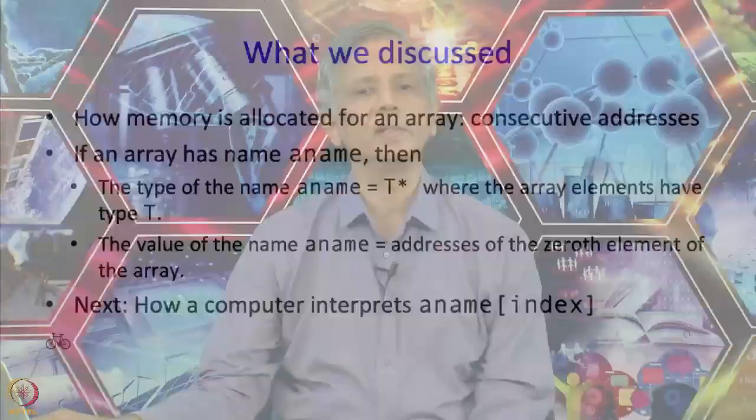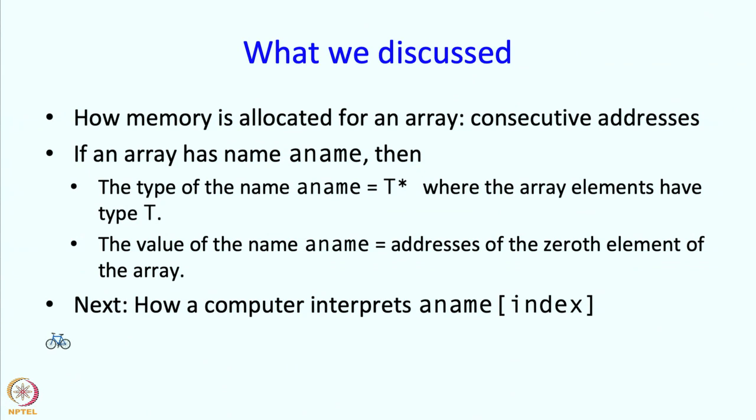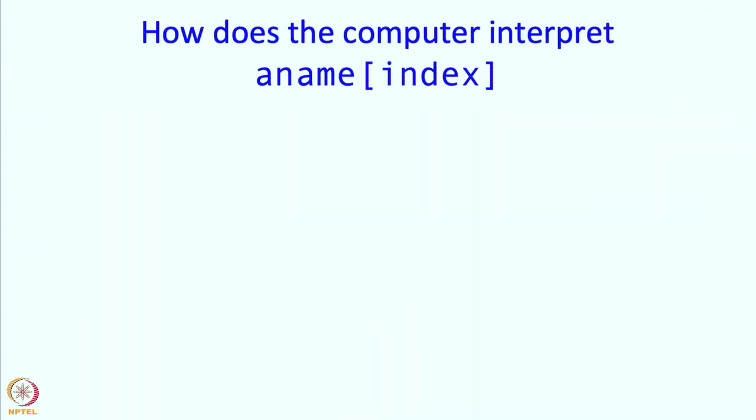In this segment we are going to discuss how a computer interprets something like a name of index. The first thing I should tell you is that square brackets are actually considered to be a binary operator by C++.